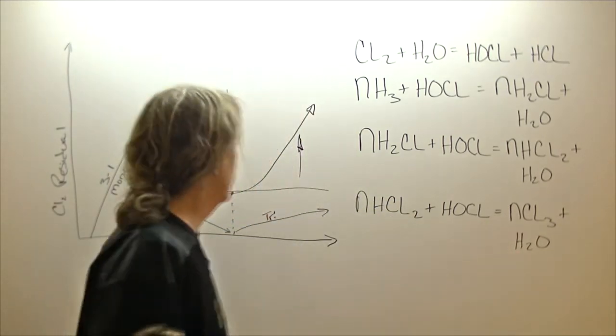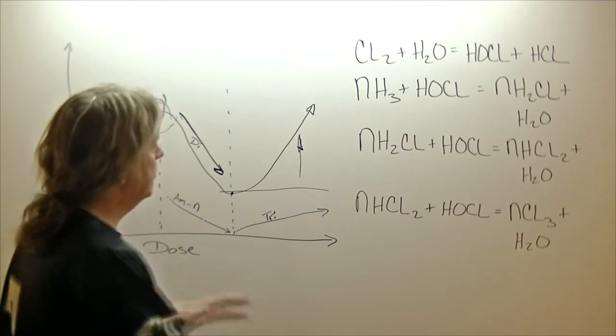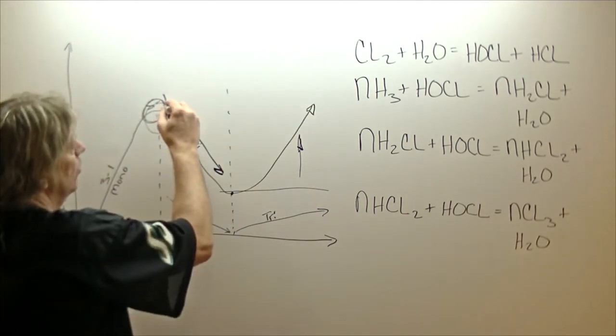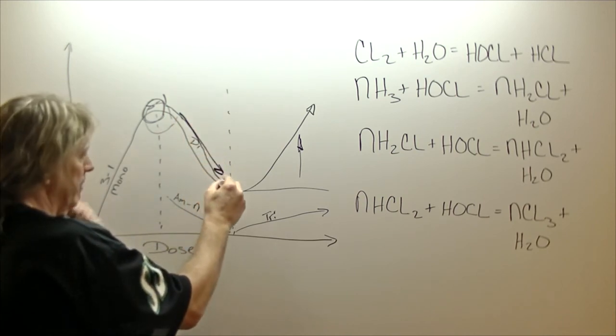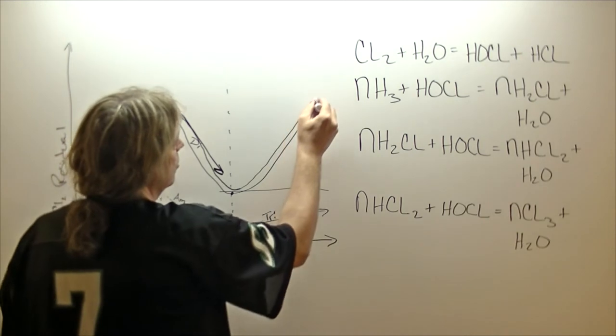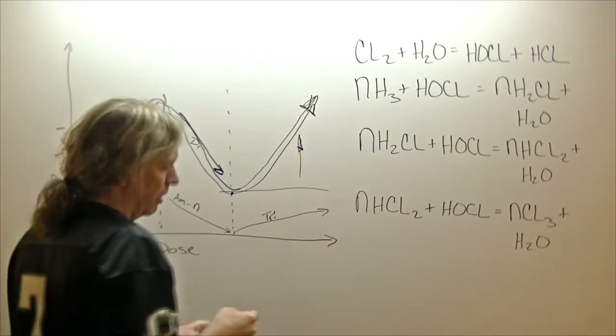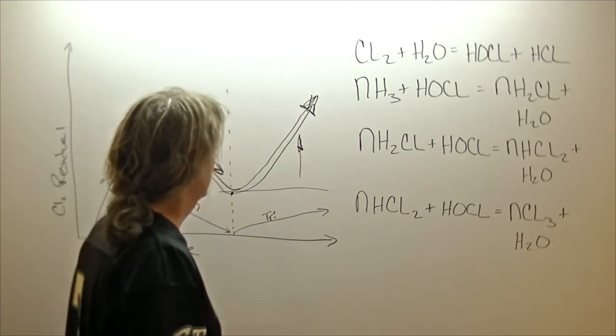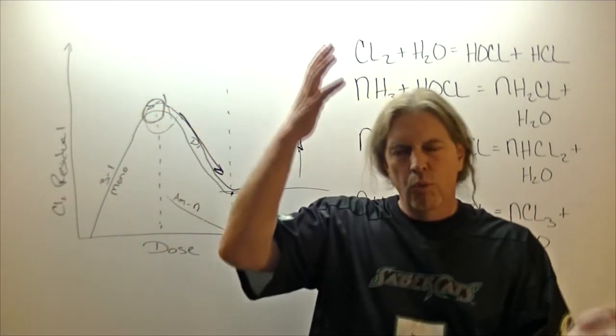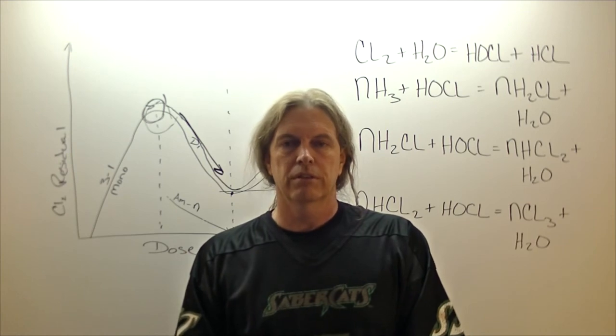And what we had to do at that point is break point chlorinate and go past it. So we had chloramines in here. We had to continue to add chlorine manually until we went down, hit break point, then continue to add chlorine manually to develop our free available chlorine residual. And so that's a little bit about that, one versus the other, and how they interact with each other.